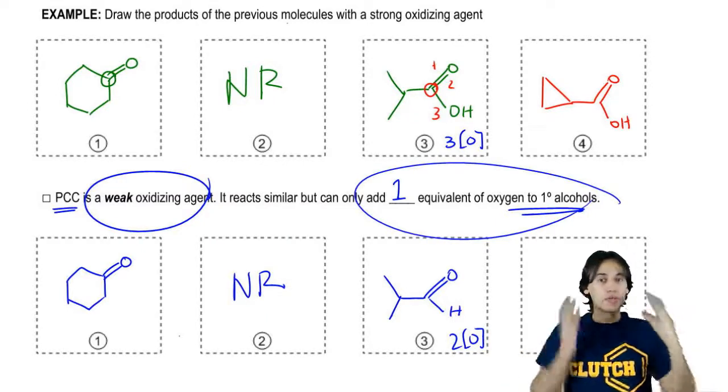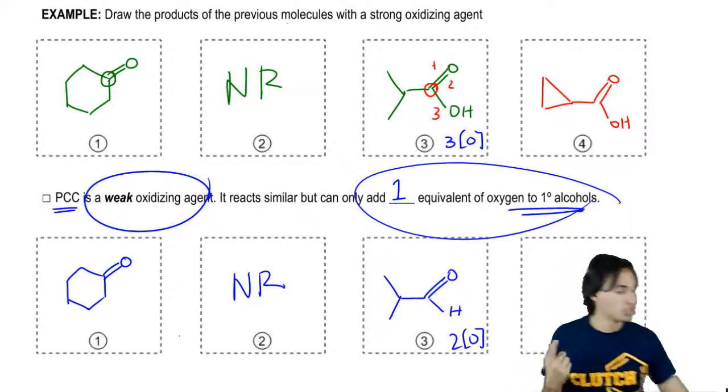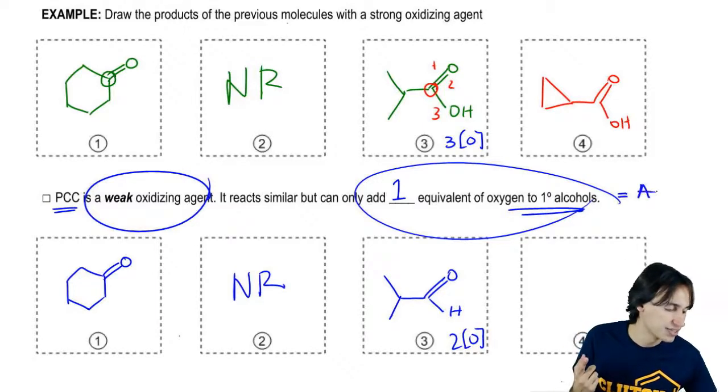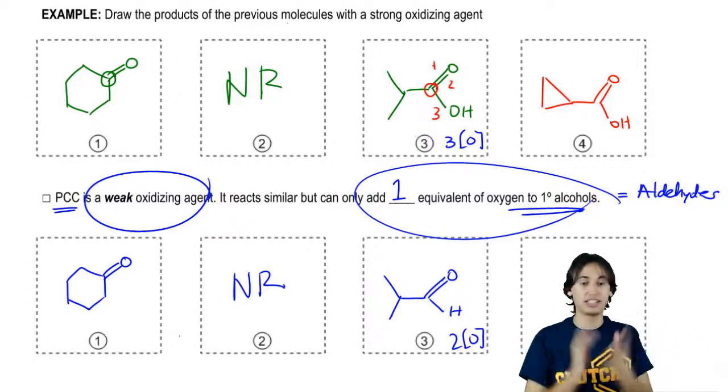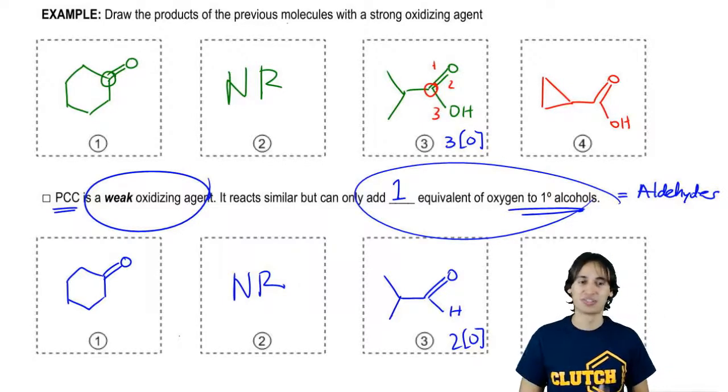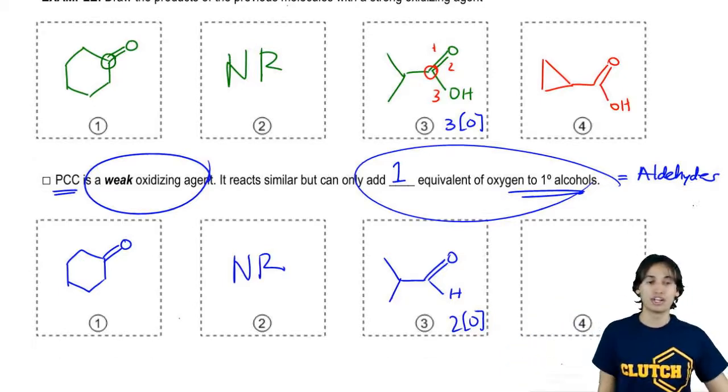But if you want to remember, just say that primary alcohols go to aldehydes. That's another way of saying it that's maybe less complicated and that's always right. You could just say it like that the rest of your life if you want to and that's fine.